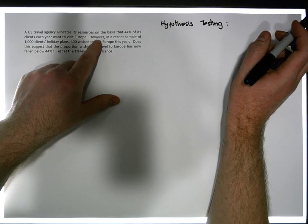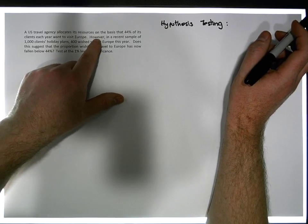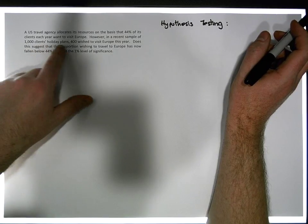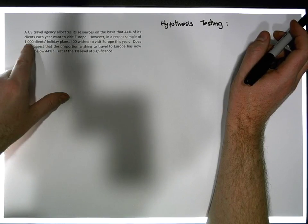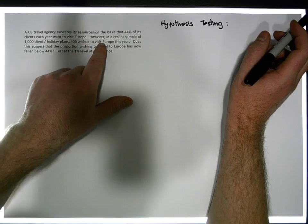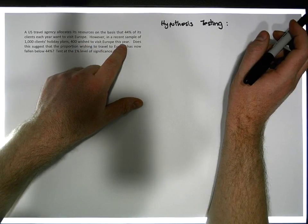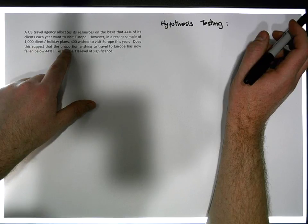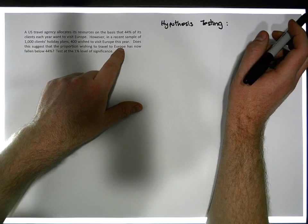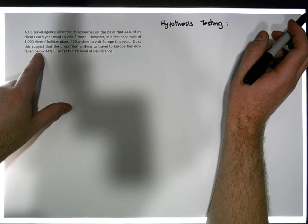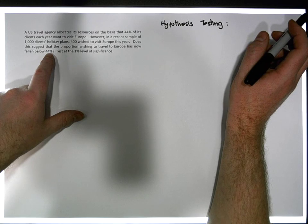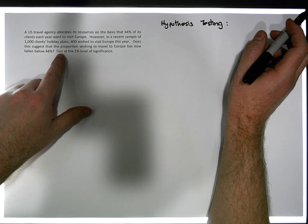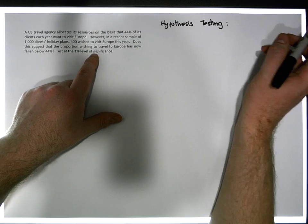Now they're wondering how accurate is that particular assessment. So what they do is they've taken a sample of their clients. In a recent sample of 1,000 clients' holiday plans, 400 of these 1,000 clients wish to visit Europe this year. Does this suggest that the proportion wishing to travel to Europe has now fallen below the 44% that the company originally allocates? Test at the 1% level of significance.